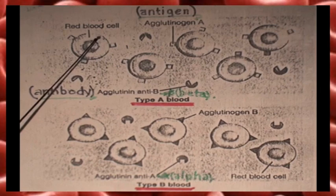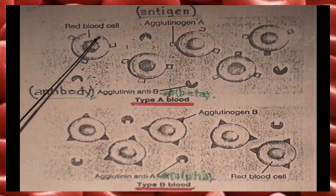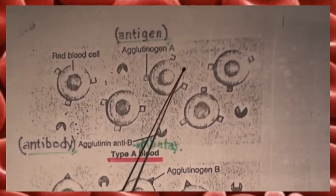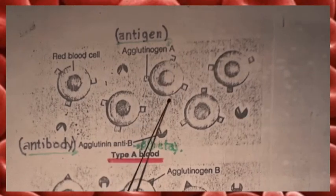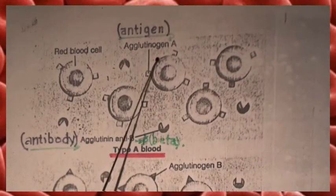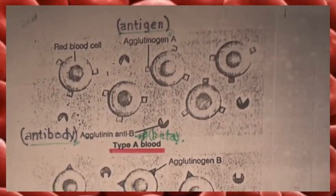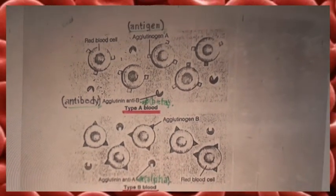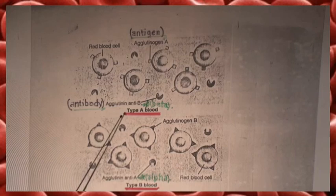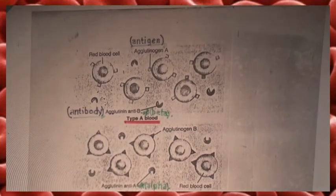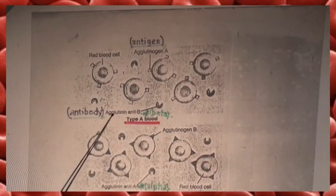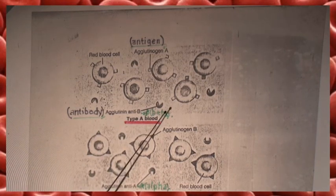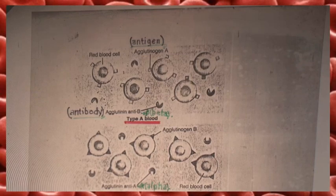Type A blood has A antigens on the surface of the red blood cells, also called agglutinogen A. In the plasma of type A individuals, there are antibodies — anti-B, or beta agglutinins.